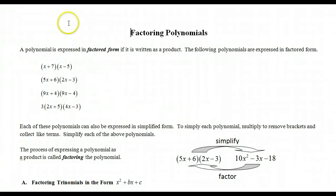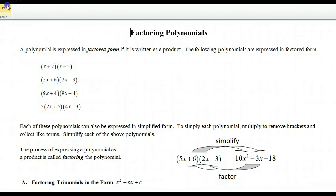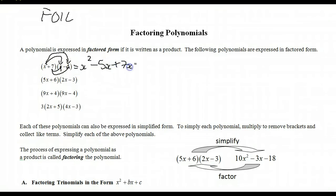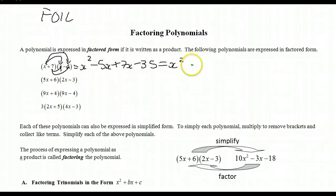Simplify each of the above polynomials. We use FOIL in order to simplify — that's a way to remind us that we want the first product, the outer numbers, the inner product, and the last. So this would be x squared minus 5x plus 7x minus 35, then simplify by collecting like terms. The x squared only comes from the first, the minus 35 from the last, and the middle terms combine to give plus 2x minus 35.